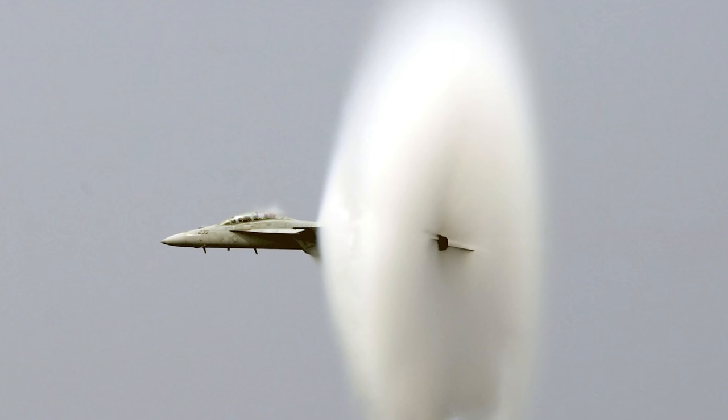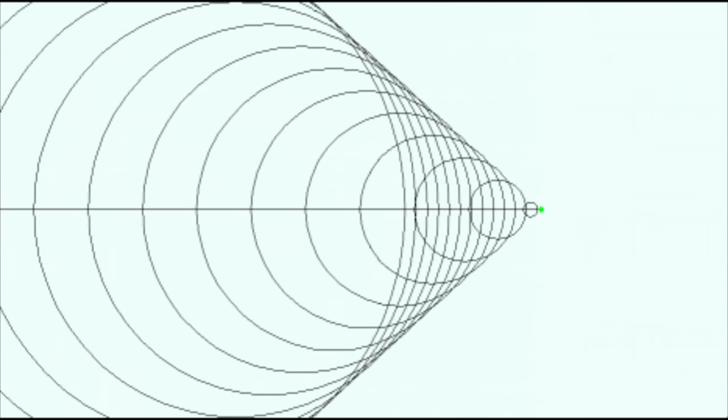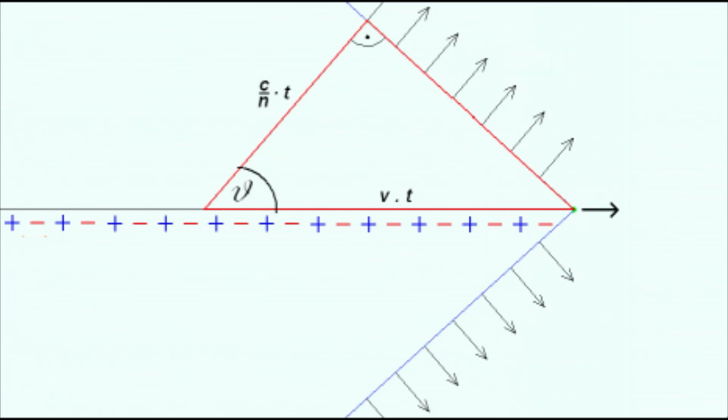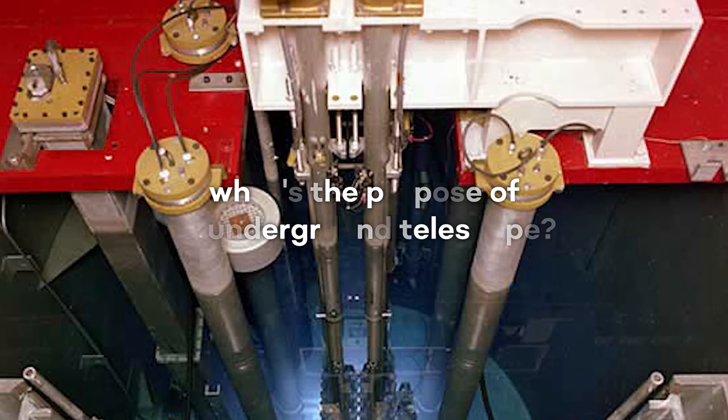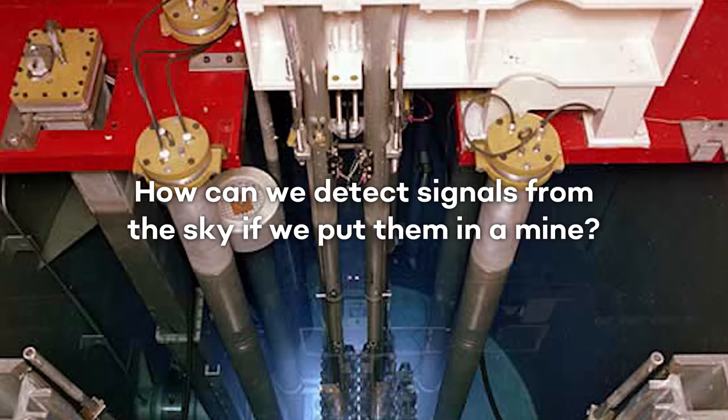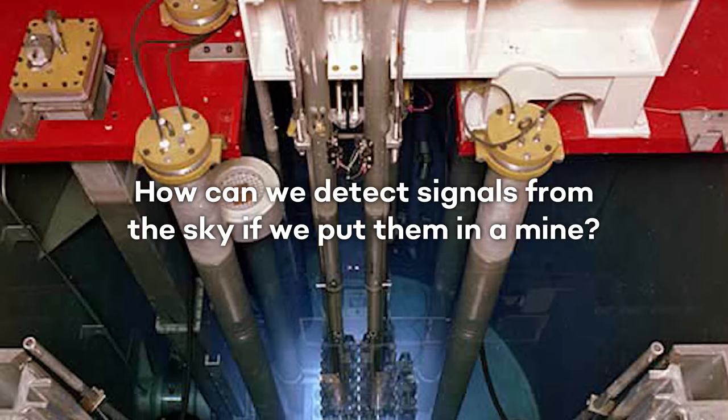Just like a fighter jet produces sound waves that travel slower than the jet itself, the particle produces light waves that travel slower than the particle itself. This Cherenkov counter would be about 15 meters in diameter, located in a mine far underground. This was an unusual choice. What's the purpose of an underground telescope? How can we detect signals from the sky if we put them in a mine?